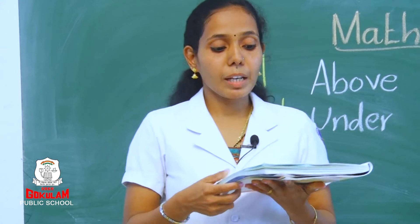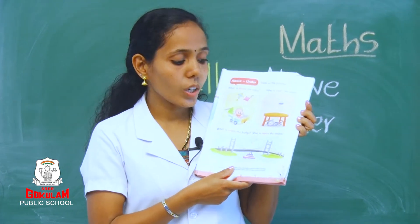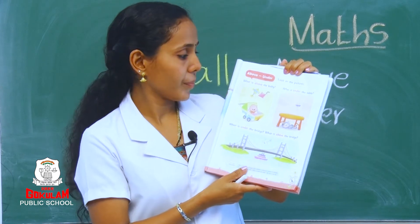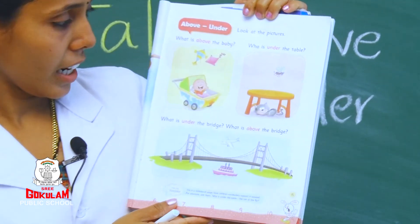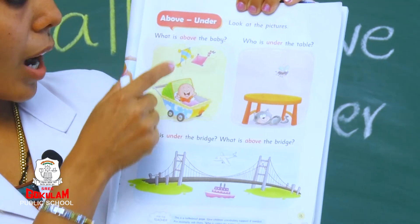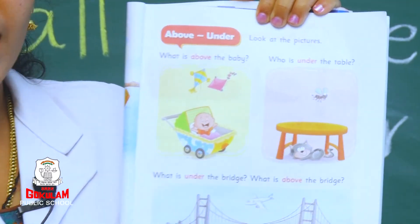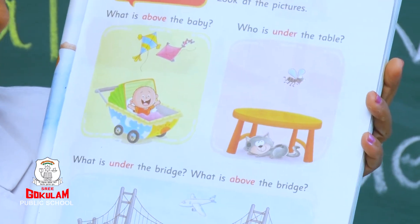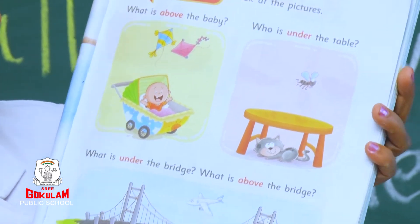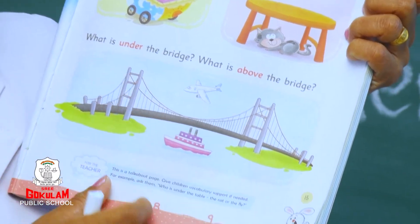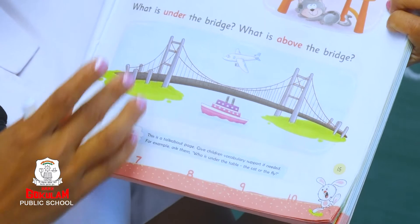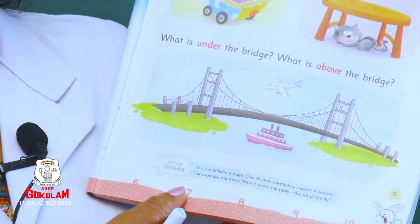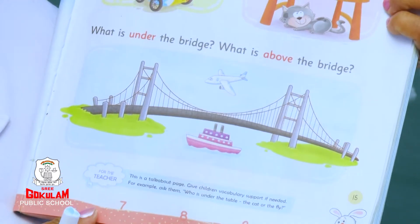Next we will practice in our textbook. Take page number 15 — above and under. Look at the pictures. The kite is above the baby. Children, look carefully. What is above the baby? Kites. See the next picture. Who is under the table? Yes, the cat. The ship is under the bridge. What is under the bridge? Yes, ship. What is above the bridge? An aeroplane is flying above the bridge.